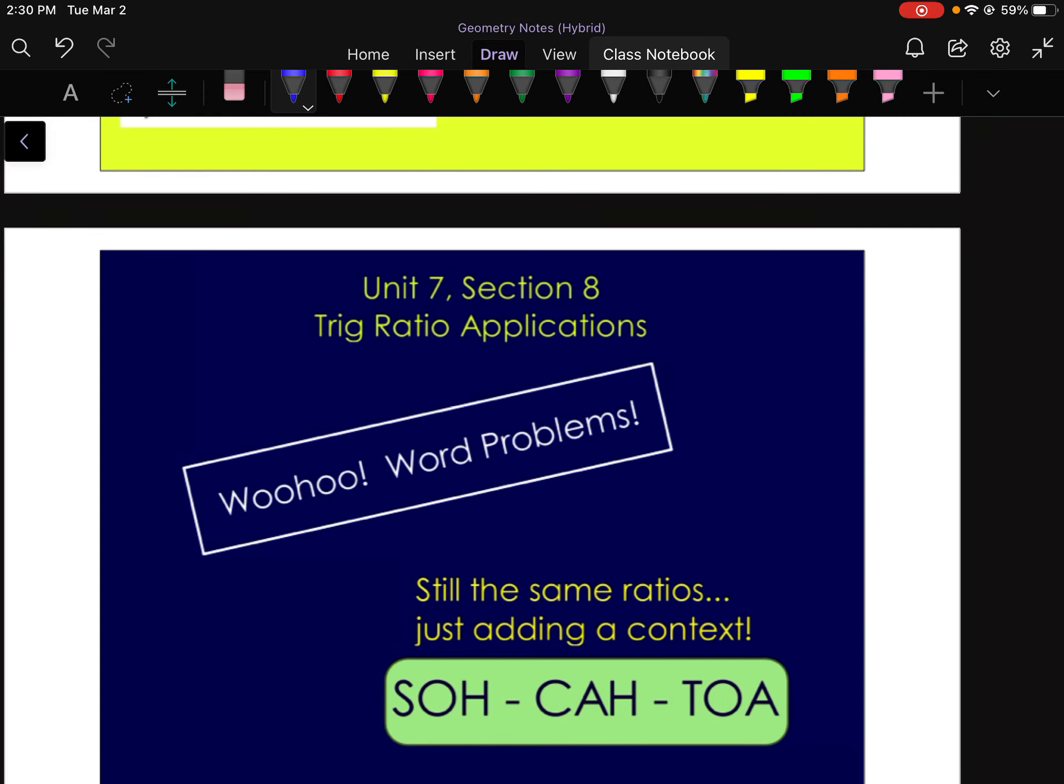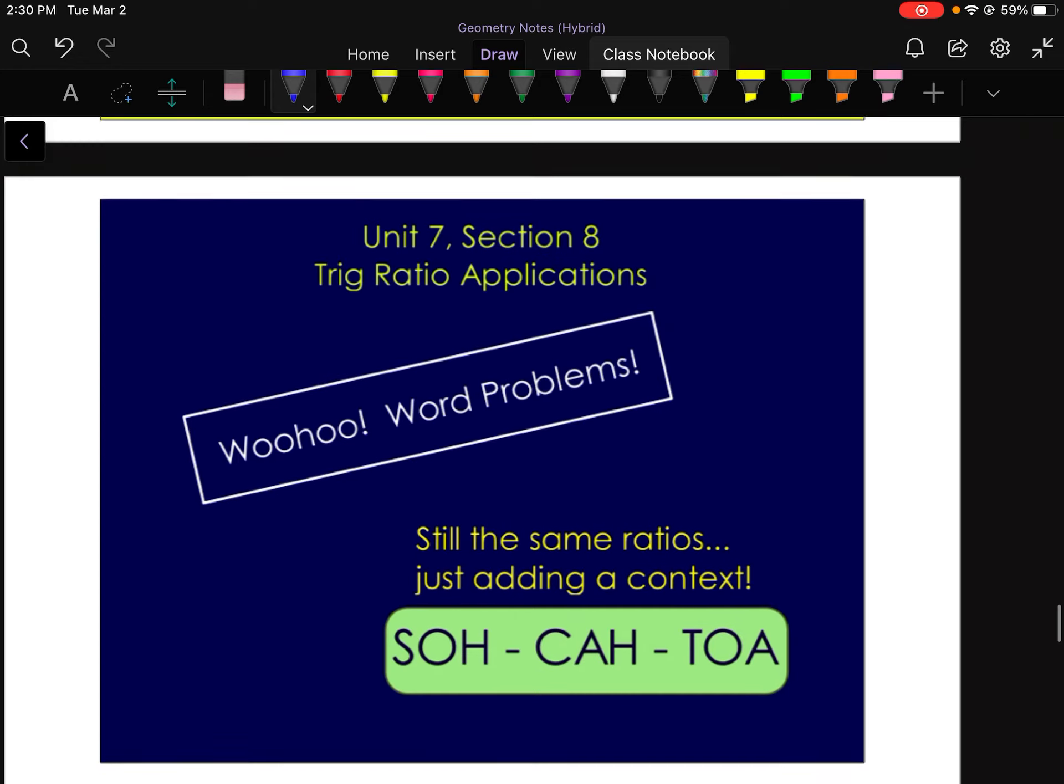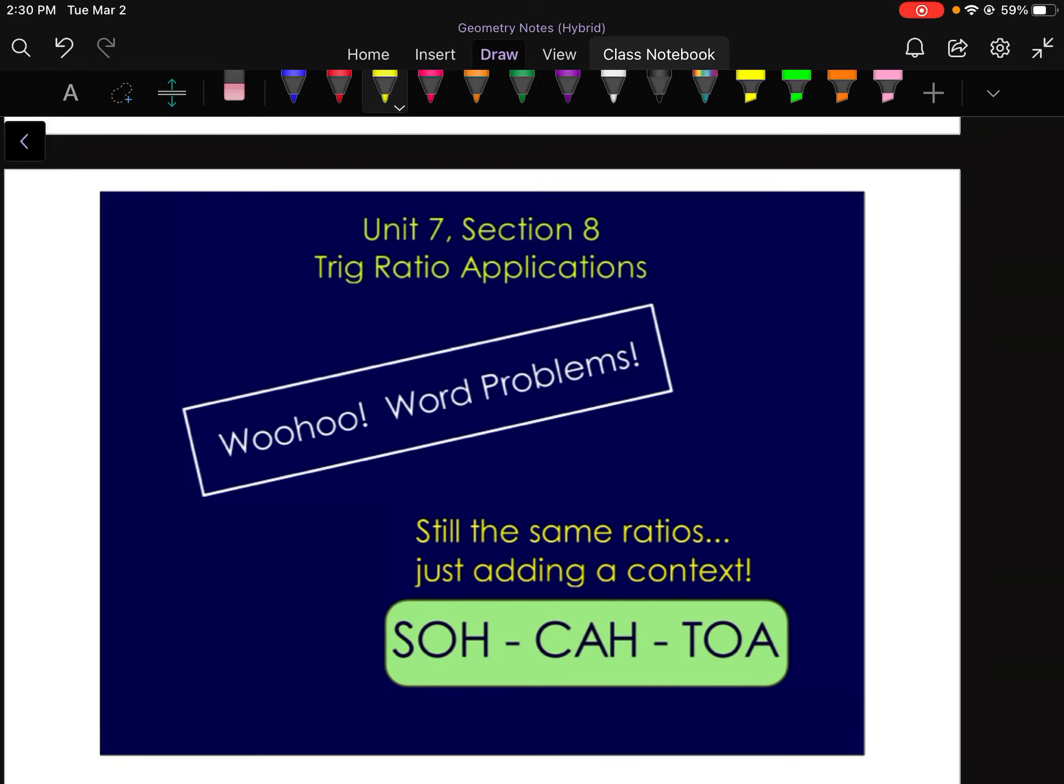All right, we are back with Unit 7, Section 8, Trig Ratio Applications, which means word problems. Let's go. So we still have the same trig ratios, we're just adding a little context. So SOHCAHTOA still applies.